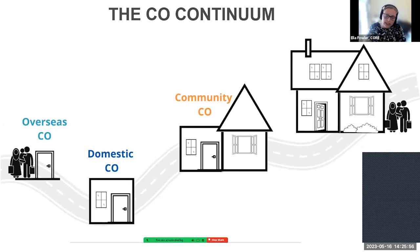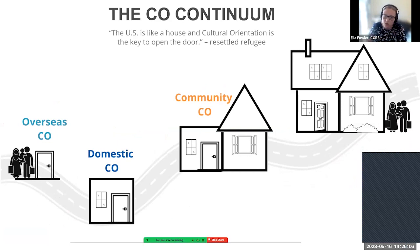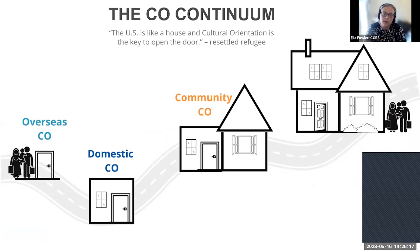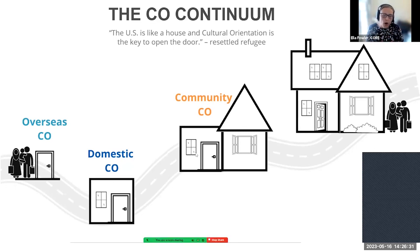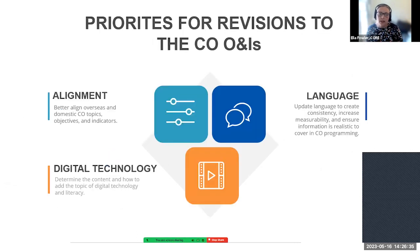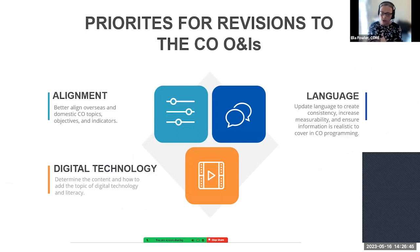As I've gone through this presentation, I've used the concept of a house as an analogy. A resettled refugee who participated in user testing with CORE said: 'The US is like a house, and cultural orientation is the key to open the door.' When I thought about this quote, if the US is a house and CO is the key to open the door, then the COONIs provide the framework of the house — and if we don't deliver on that framework, there is no door to open. The COONI task force strengthened the COONIs by looking at three areas: alignment, language, and digital technology.